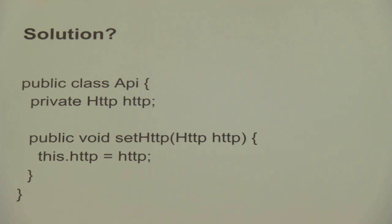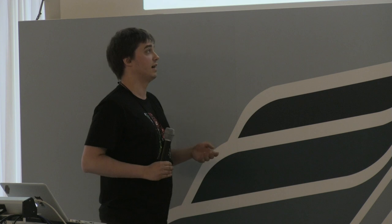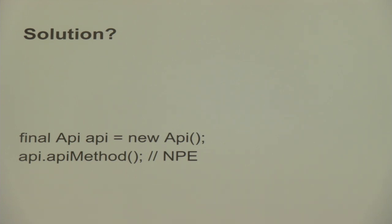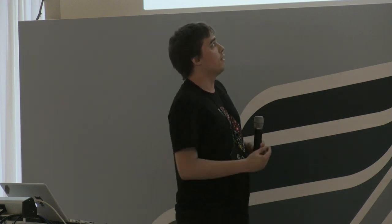Another approach developers use is exposing a setter specifically for that field — so in production you set the real HTTP implementation that connects to the web service, and in tests you use a mocked HTTP via that setter. But this has the same badness. If our API cannot be used without the HTTP dependency, why should we be able to construct it without HTTP in the constructor?